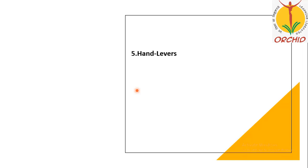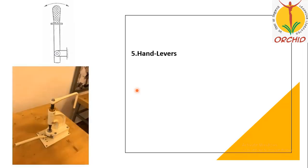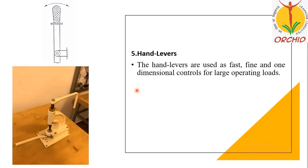Next is the hand lever. Hand levers are used as a fast, fine and one dimensional control for large operating loads. It can operate only in one dimension — the lever moves only back and forth in one direction.